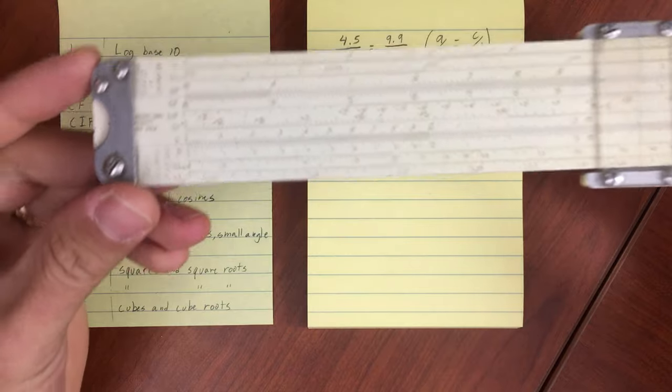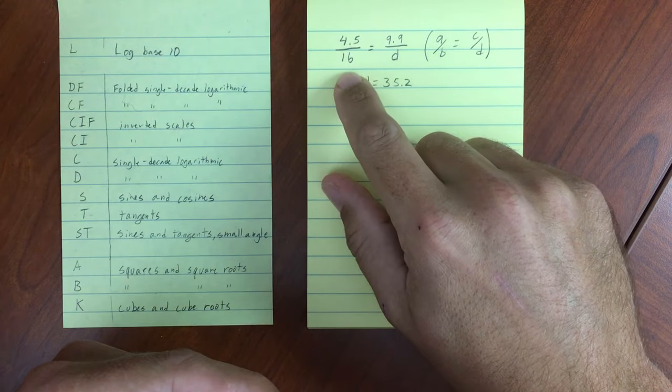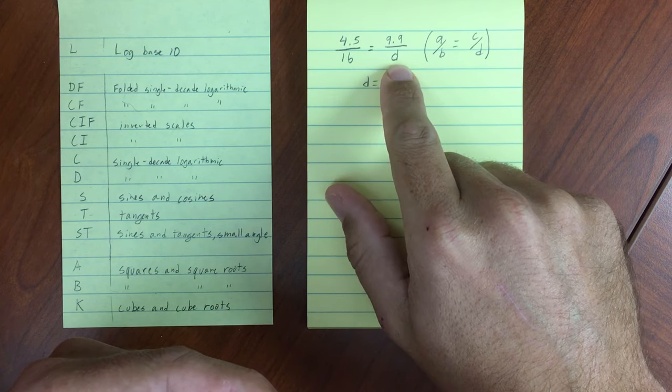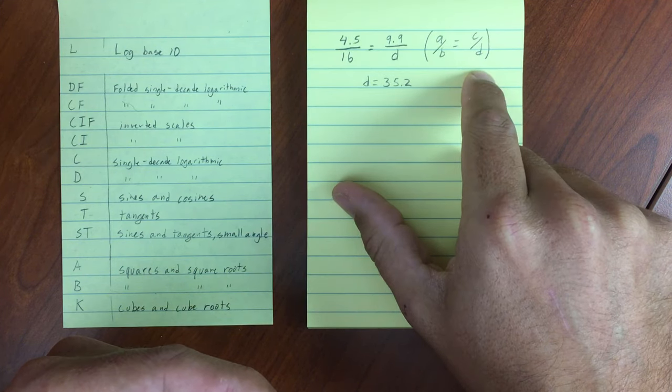Now here's another neat trick that relies on the C and D scales. If you need to find a ratio of something, like 4.5 divided by 16 equals 9.9 divided by something (this D), it's in the form of A divided by B equals C divided by D.